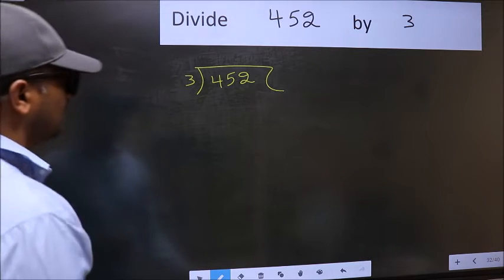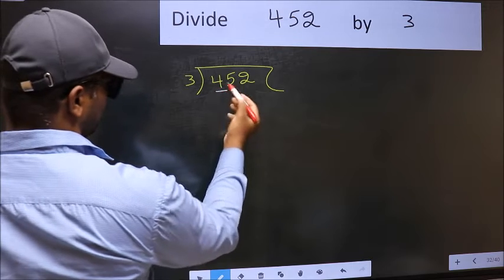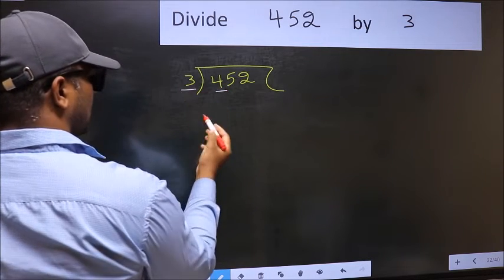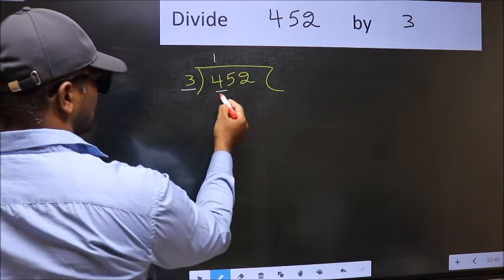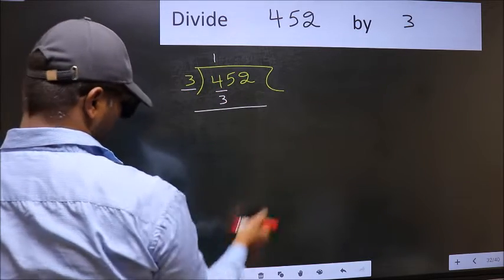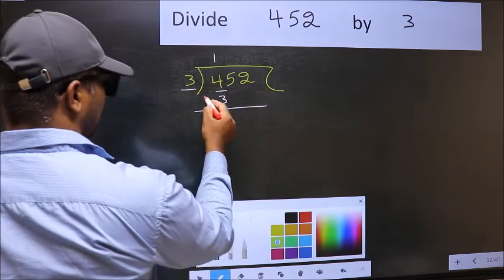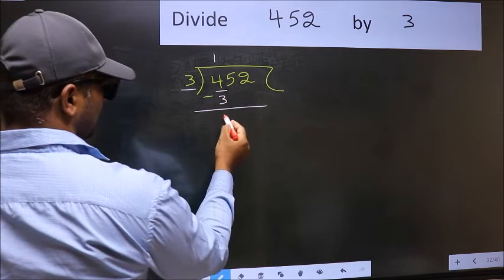Next. Here we have 4 and here 3. A number close to 4 in 3 table is 3 1s 3. Now you should subtract 4 minus 3, 1.